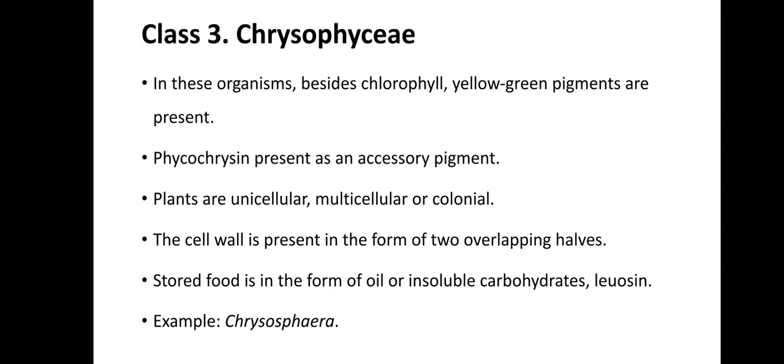Class 3 is Chrysophyceae. In these organisms, besides chlorophyll, yellow-green pigments are present. Phycochrysis is the main pigment which gives the color. They are mainly unicellular, but may be multicellular or colonial. The cell wall is present in the form of two overlapping halves. Stored food is in the form of oil or an insoluble carbohydrate called leucosin. For example, Chrysophera.